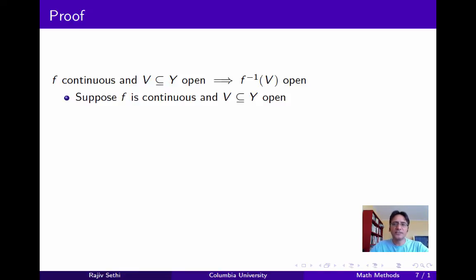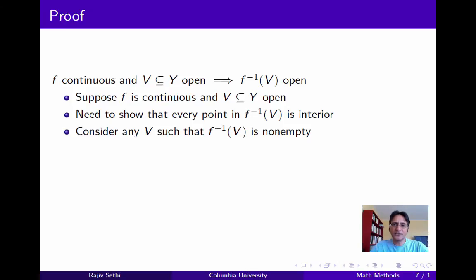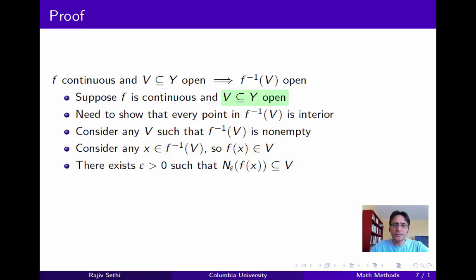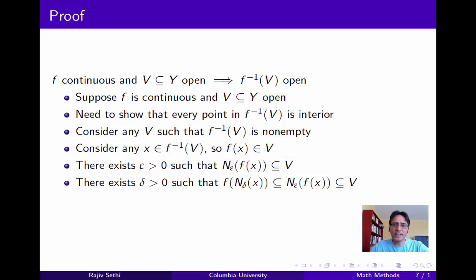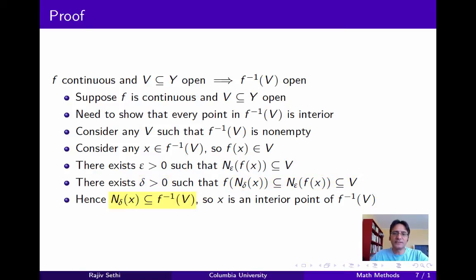Suppose that f is continuous and v is an open set in the co-domain. We want to show that every point in the inverse image of v is an interior point, from which we can deduce that the inverse image of v is open. If v has an empty inverse image, the result follows immediately. So consider any v for which the inverse image is non-empty. There must exist some point x in the inverse image, so the image of x must be in v. Since v is open, there exists some positive epsilon such that the epsilon neighborhood of f(x) is a subset of v. By continuity, there exists a positive delta such that the image of the delta neighborhood of x is a subset of the epsilon neighborhood of f(x), which is a subset of v. This implies the delta neighborhood of x is a subset of the inverse image of v, so x is an interior point. Since x was arbitrary, the inverse image of v must be open.